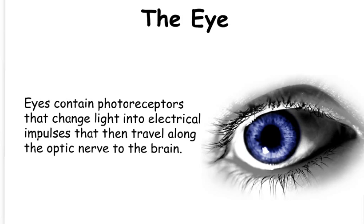Eyes contain photoreceptors. These are receptors that detect light. These receptors change light into electrical impulses that then pass along the optic nerve to the brain. It is then your brain that interprets these signals and produces the image that we see.